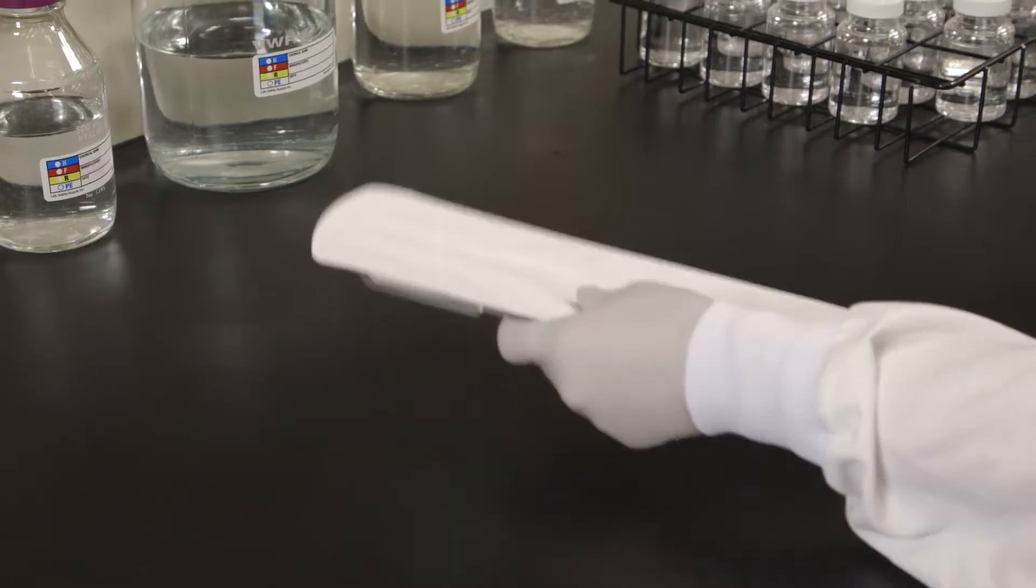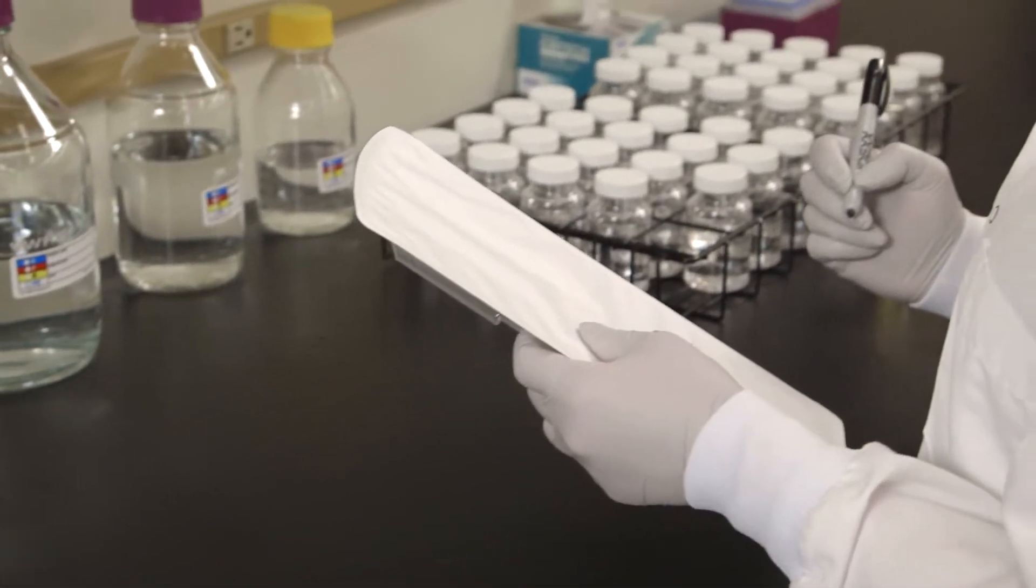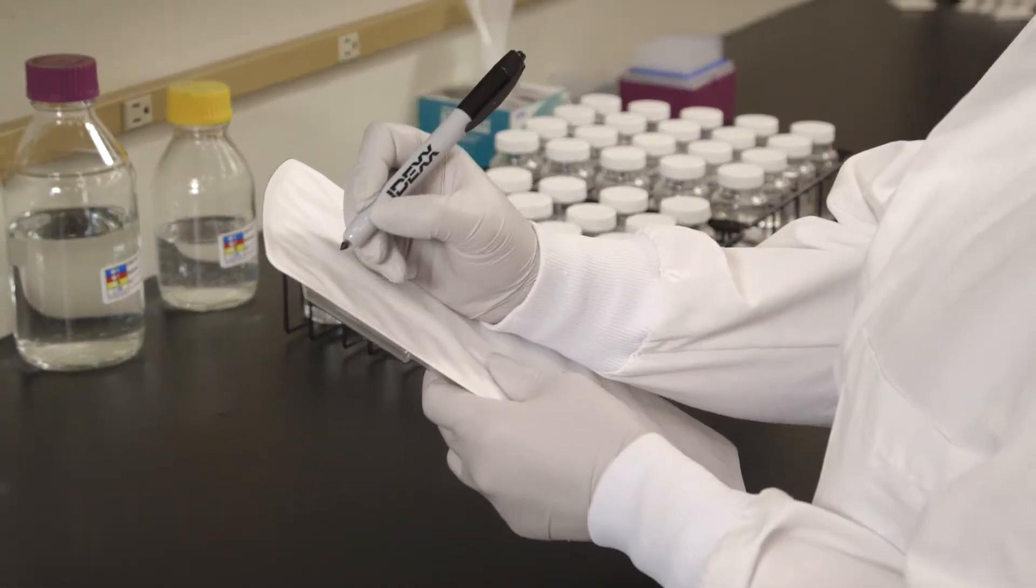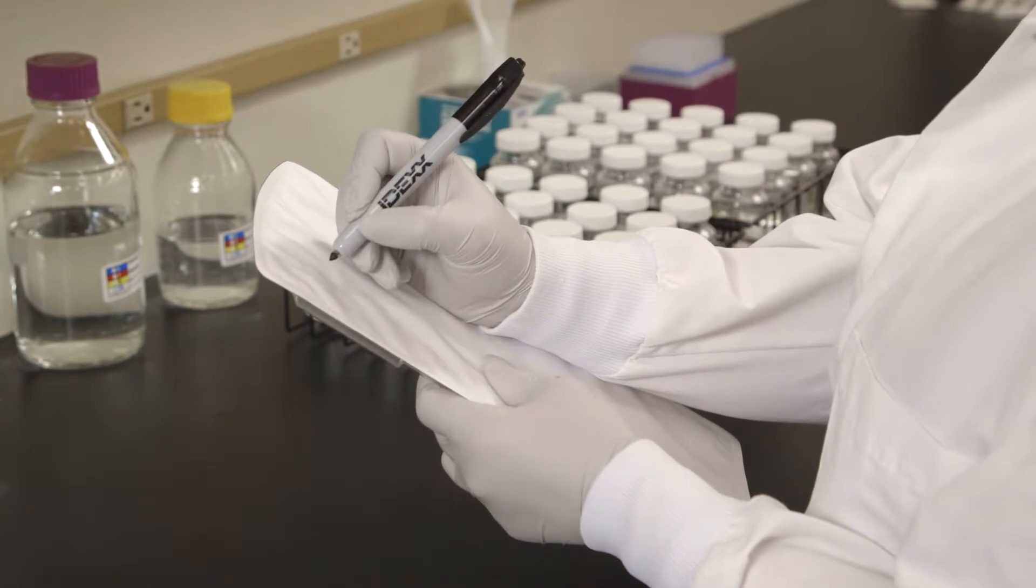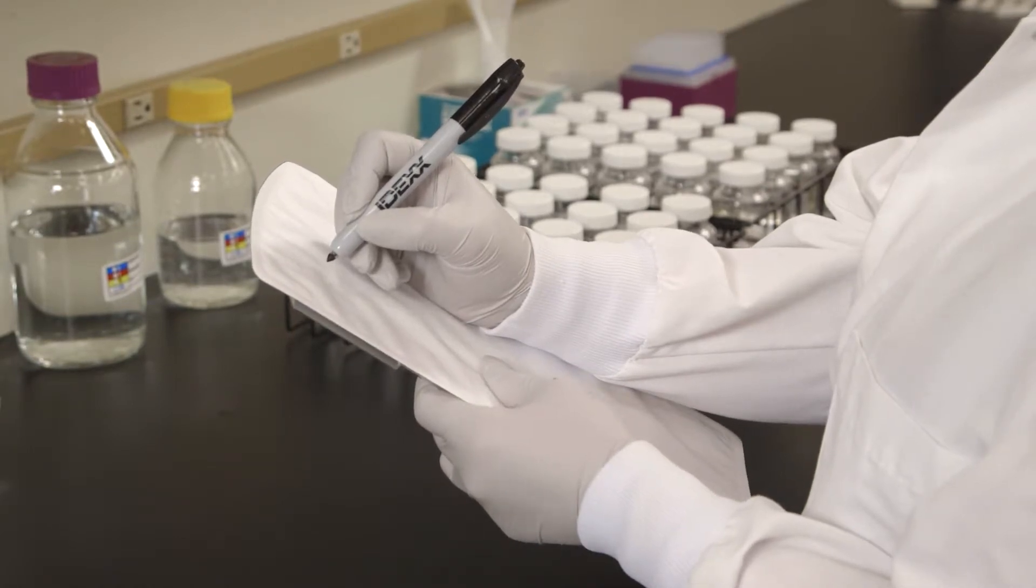Use only a permanent felt-tip marker to label the quantitray LEG-ALERT tray. Adhesive labels may adhere to the sealer roller, and ballpoint pens may puncture the paper.